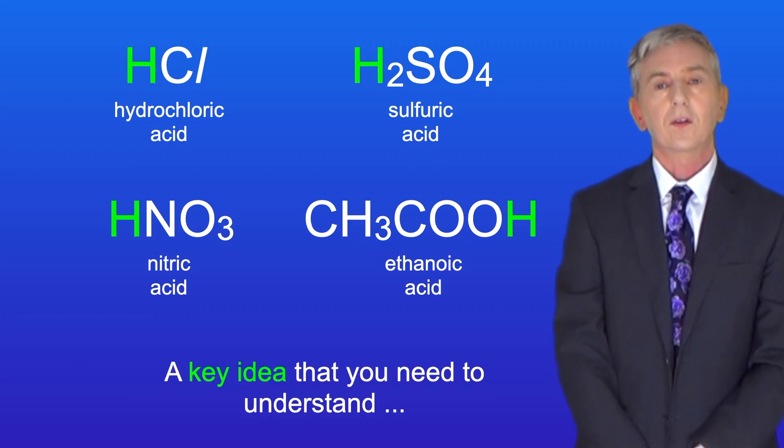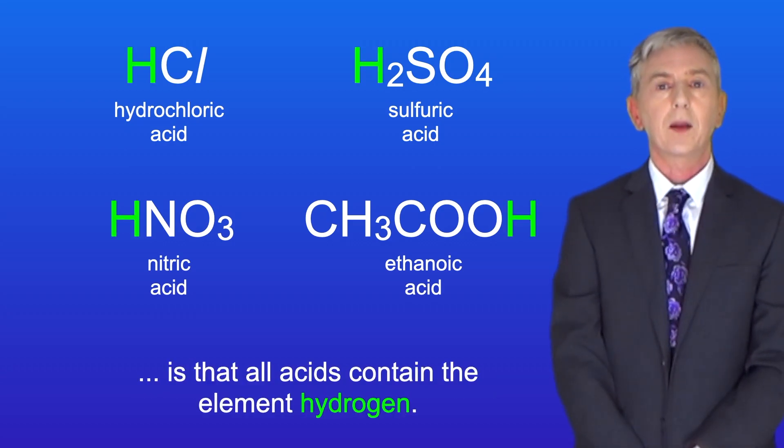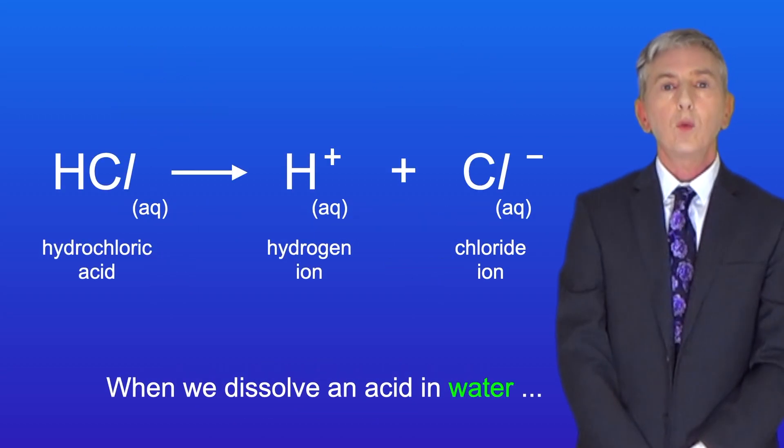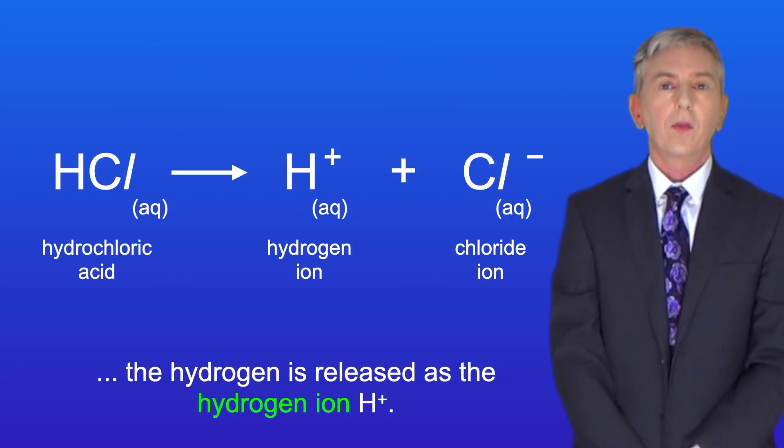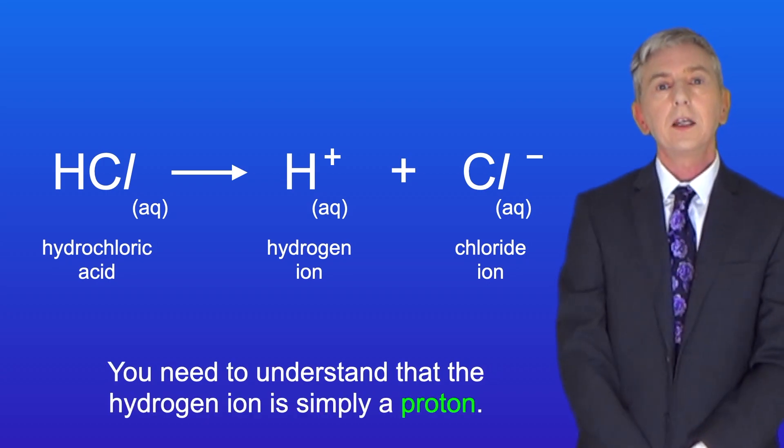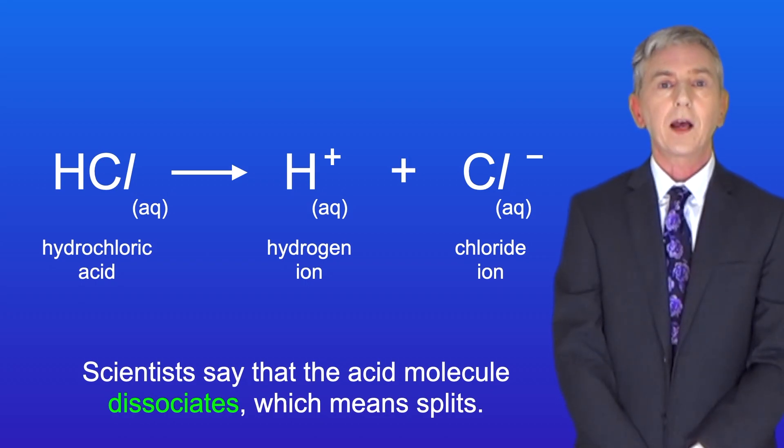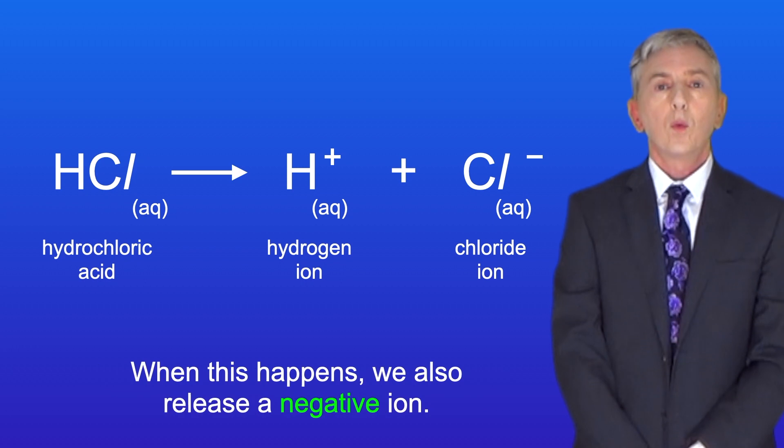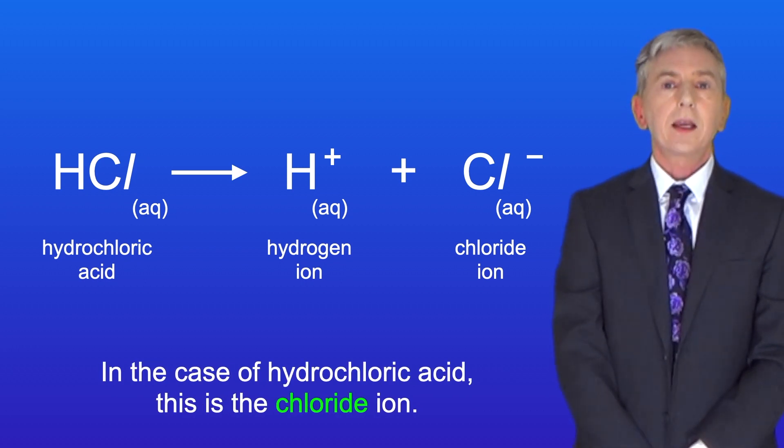Now a key idea you need to understand is that all acids contain the element hydrogen. When we dissolve an acid in water the hydrogen is released as the hydrogen ion H+, and you need to understand that the hydrogen ion is simply a proton. Scientists say that the acid molecule dissociates, which means splits. When this happens we also release a negative ion. In the case of hydrochloric acid this is the chloride ion.